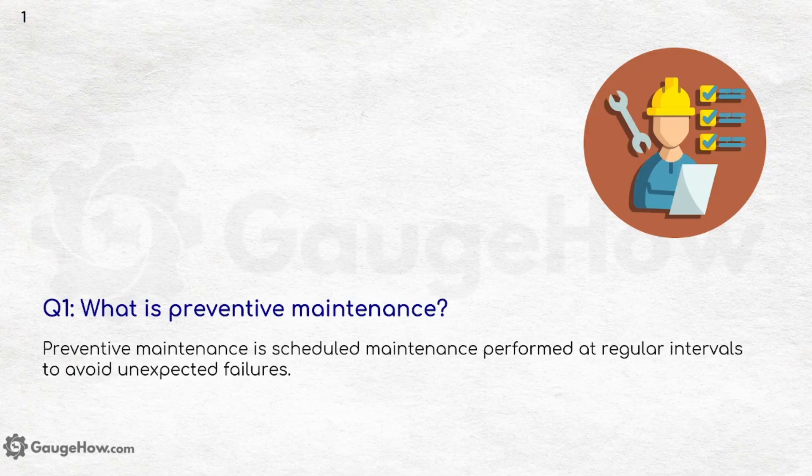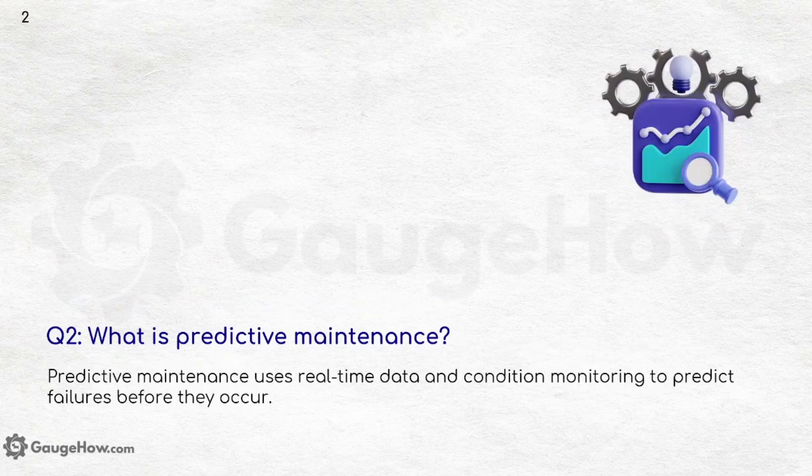What is preventive maintenance? Preventive maintenance is scheduled maintenance performed at regular intervals to avoid unexpected failures. What is predictive maintenance? Predictive maintenance uses real-time data and condition monitoring to predict failures before they occur.